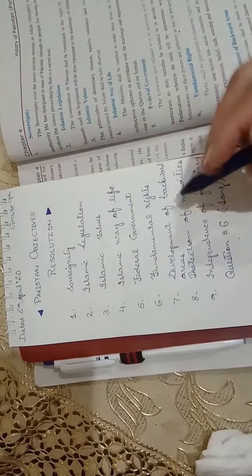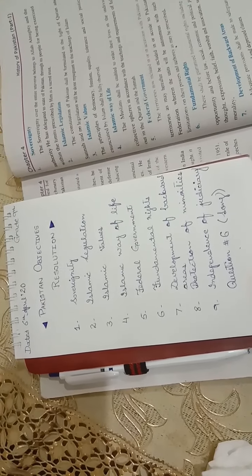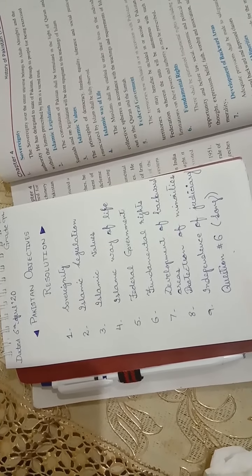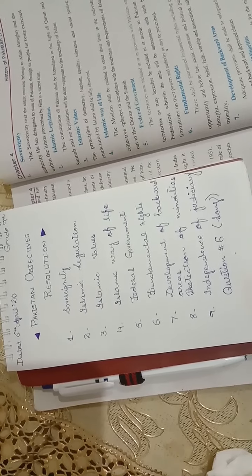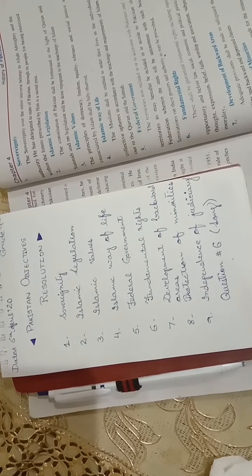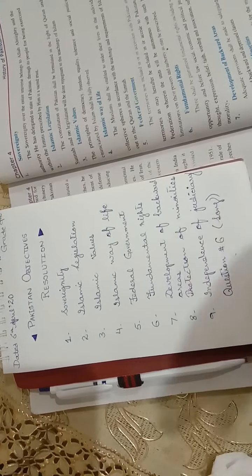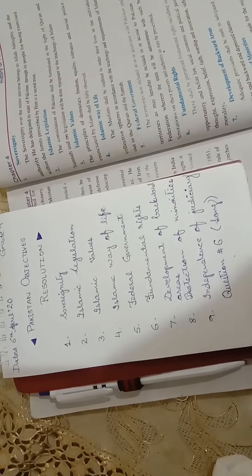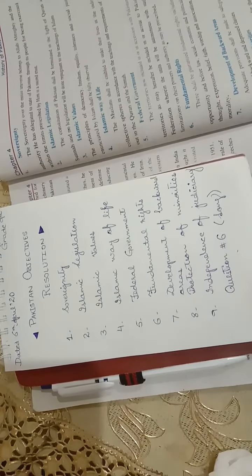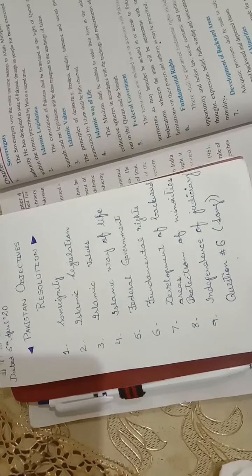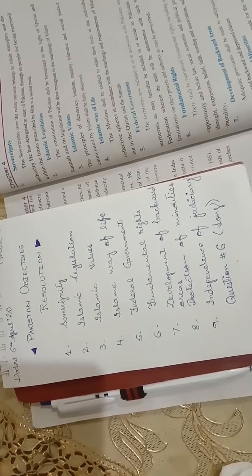Number one was sovereignty. Sovereignty is basically a concept or a belief اس کا مطلب ہی ہوتا ہے کہ ہم یہ consider کریں کہ اللہ تعالی کی جو ذات ہے that is sovereign most above all. اور اسی نے جو ہے state of government اور پاکستان کو یہ authority دی ہے کہ وہ ان کے لوگوں کے لیے کام کریں.